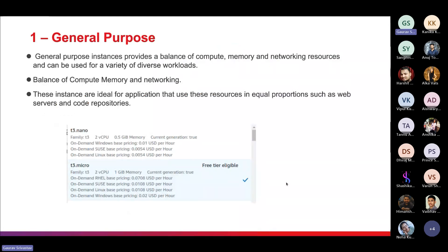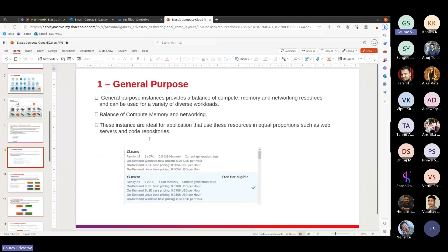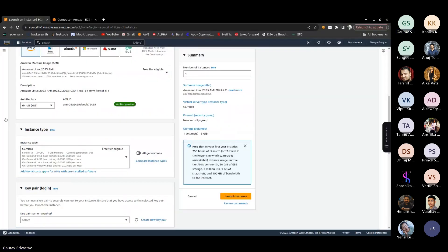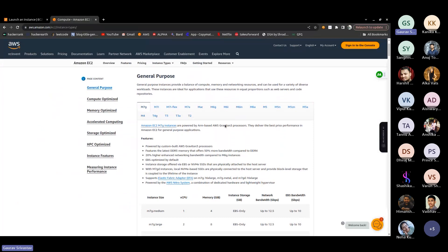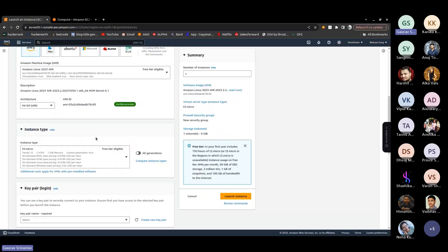General purpose instances provide a balance of computing, memory, and networking resources. If you want to develop a small application with modest computation and memory needs, you can choose general purpose. Let me show you which AMIs are present for general purpose instances.